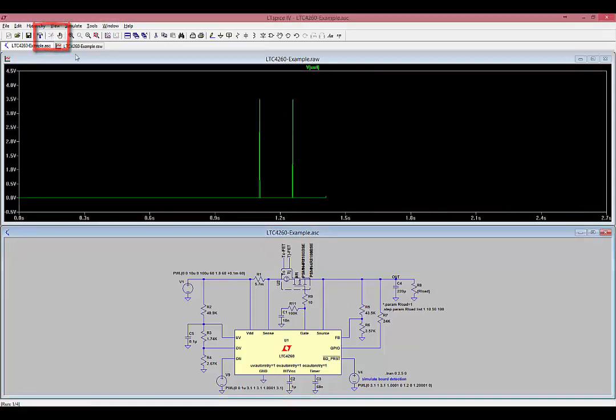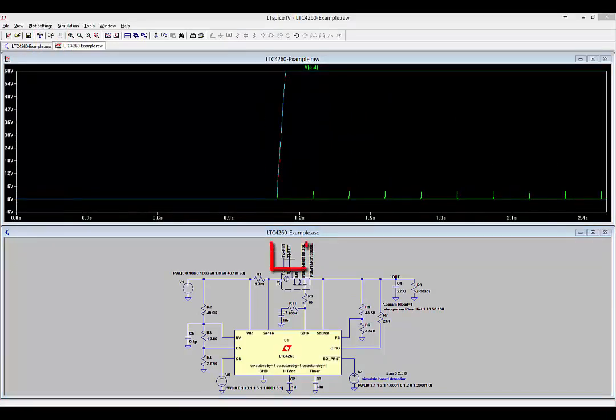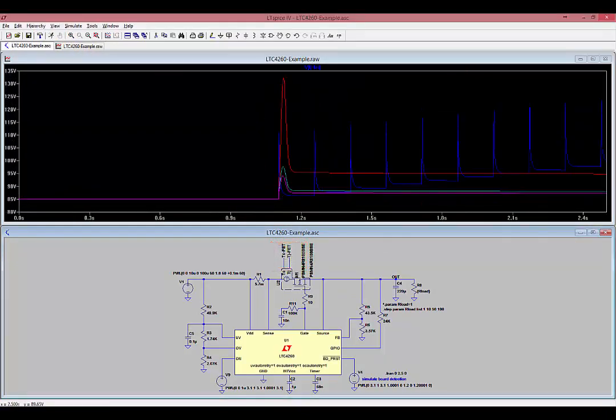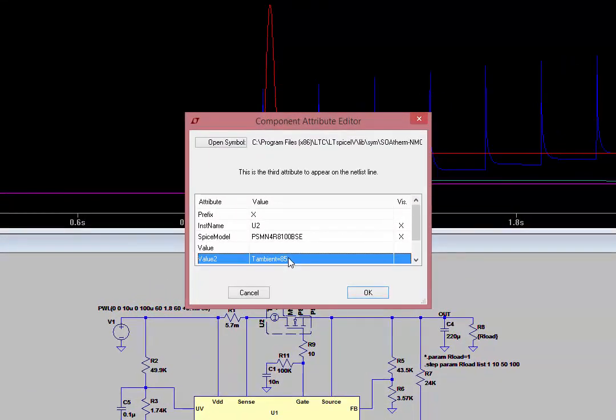Run the simulation again, and this time, double-click on the TJ-FET node. The voltages at the TC-FET and TJ-FET nodes represent the case temperature and junction temperature of the MOSFET in degrees Celsius. We see that TJ-FET reaches 132 degrees C, and it started from 85 degrees C. So at this point, you're probably wondering, why does it start from 85 degrees C? The SOATherm symbol has a default ambient temperature value of 85 degrees C. We can change that by right-clicking on the eye of the symbol and changing the T ambient equals 85 to T ambient equals 70. So let's do that now.